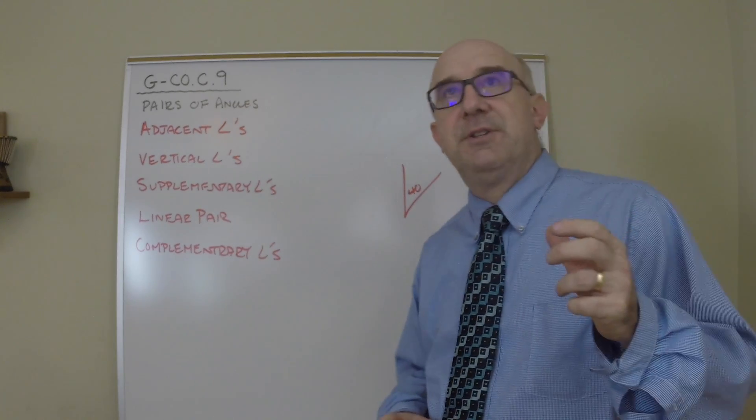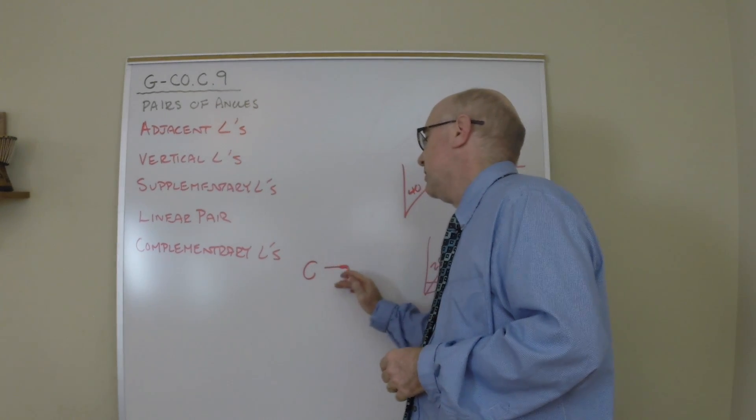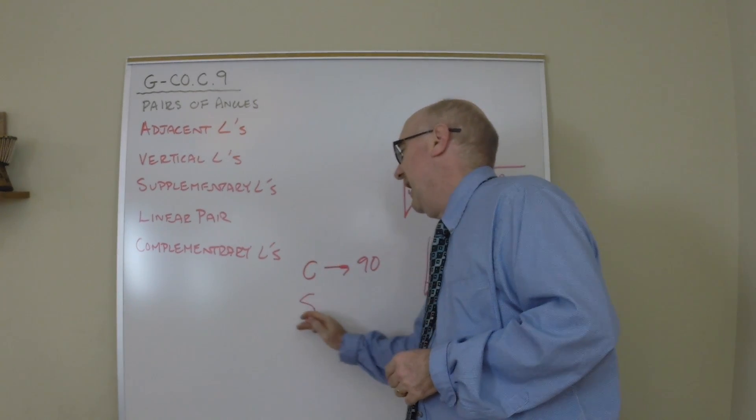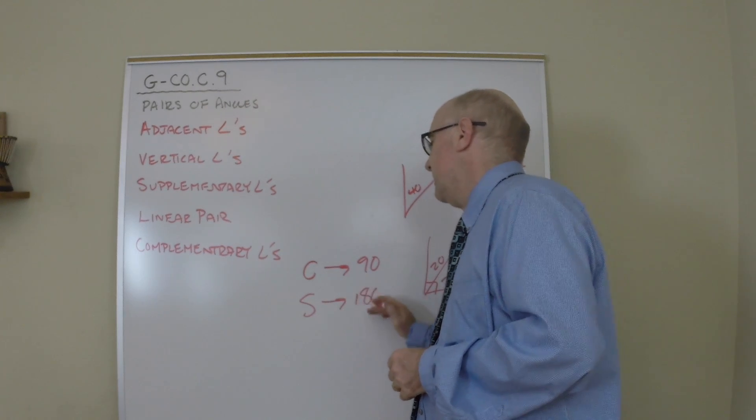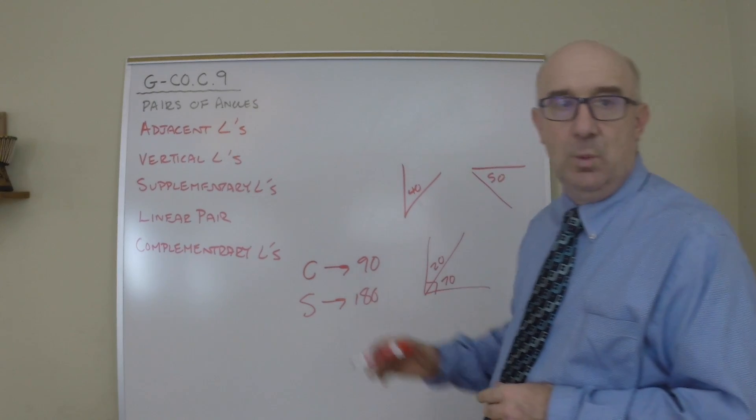Students often struggle with complement and supplement. Here's my tip. C comes first. S comes later. In the alphabet, C-S. In order to be a 90, 180.